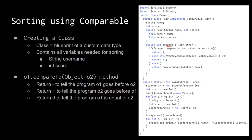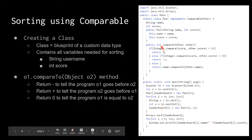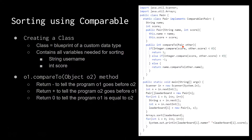You would define 'public int compareTo(Pair other)'. You have to name it compareTo because it's part of Comparable — you can't change the name. You pass in another Pair. You won't actually call this directly; when you're doing Arrays.sort, it will use this function internally. It will return an int — a negative number means this pair goes before the other pair. For example, 'Integer.compare(score, other.score)' returns negative if this score is less than the other score.